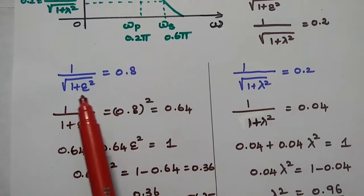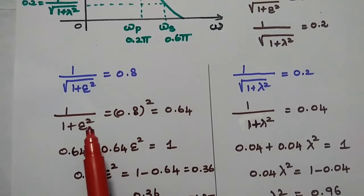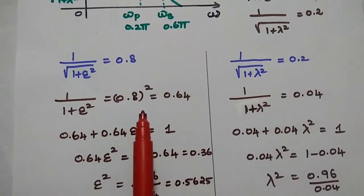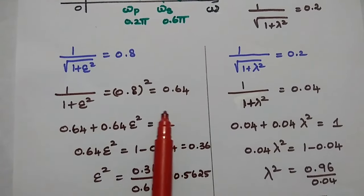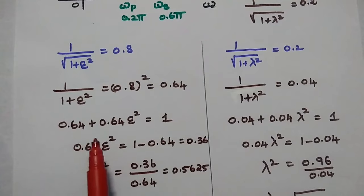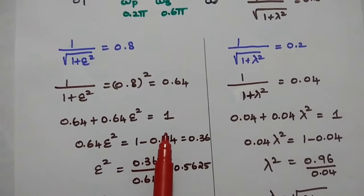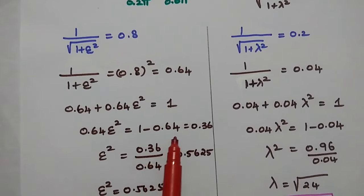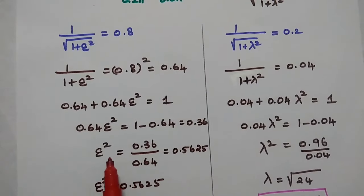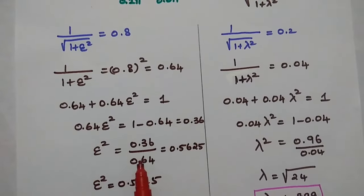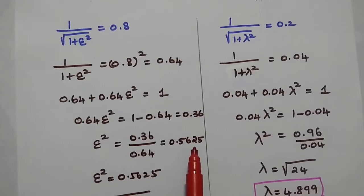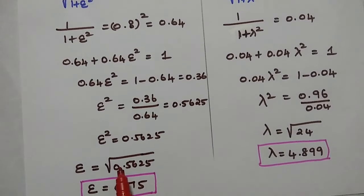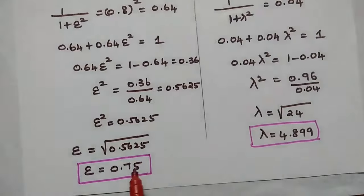To find ε: starting from 1/√(1 + ε²) = 0.8, we square both sides to get 1/(1 + ε²) = 0.64. Cross-multiplying gives 0.64 + 0.64ε² = 1, so 0.64ε² = 0.36, meaning ε² = 0.36/0.64 = 0.5625. Taking the square root, ε = 0.75.